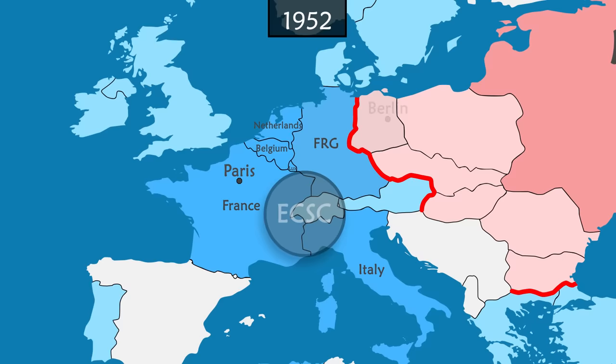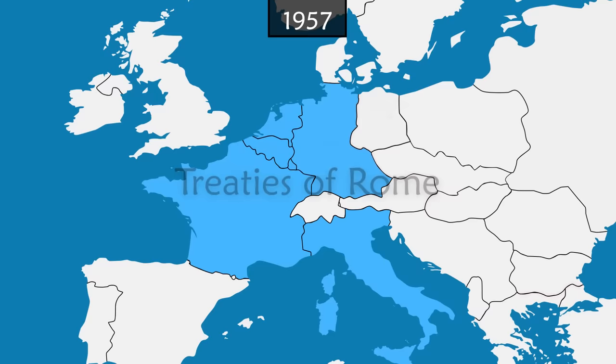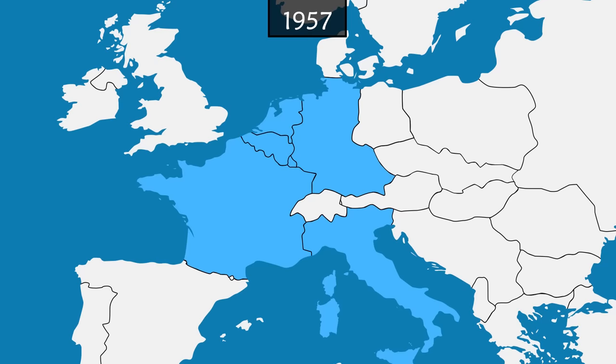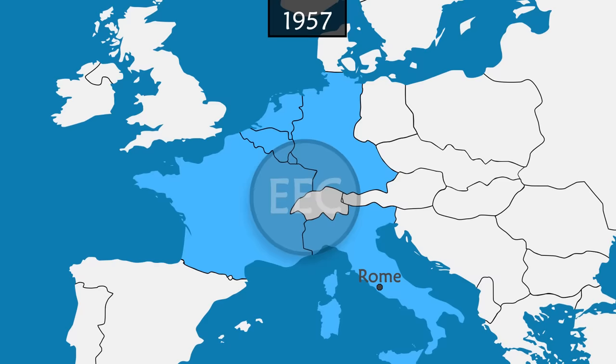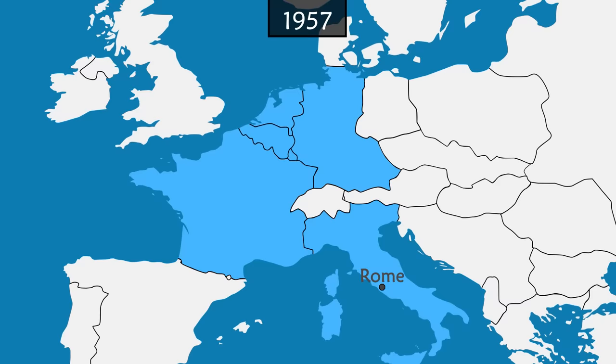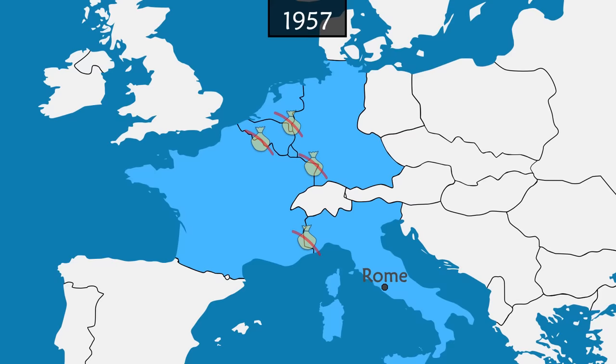As Germany is divided by the Iron Curtain, only West Germany becomes part of it. To accelerate the development of Europe, the six founding countries meet on 25 March 1957 in Rome to sign two new treaties. The first treaty creates the European Economic Community, whose main objective is to establish a common market, including allowing the free movement of workers and eliminating tariffs between member states.